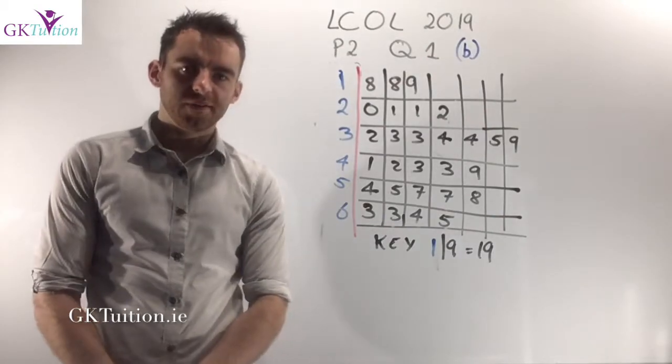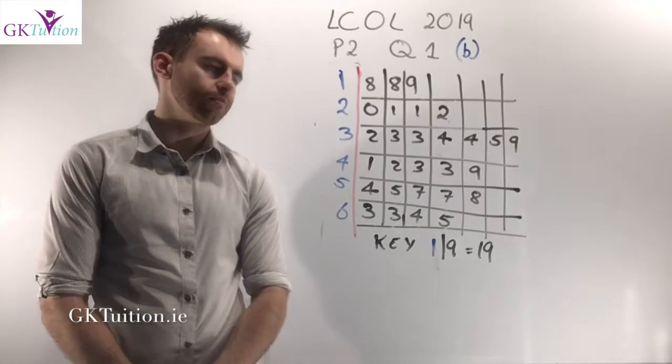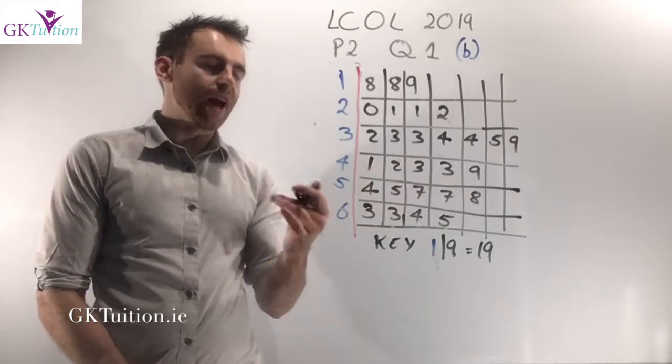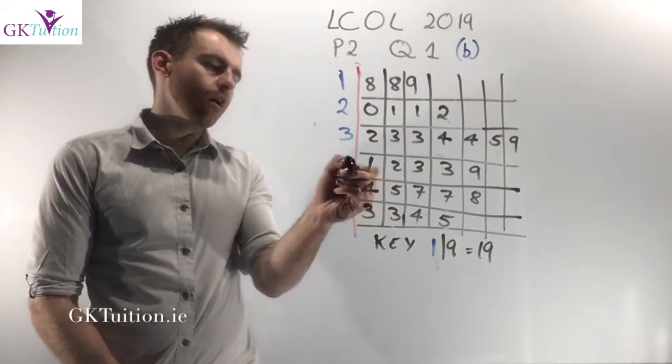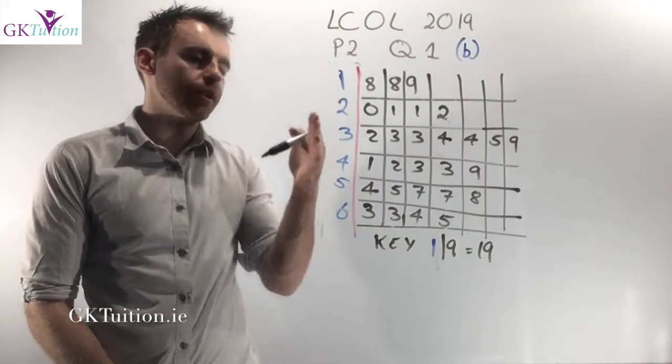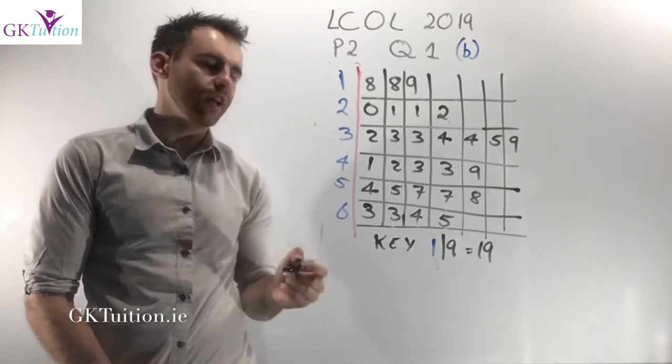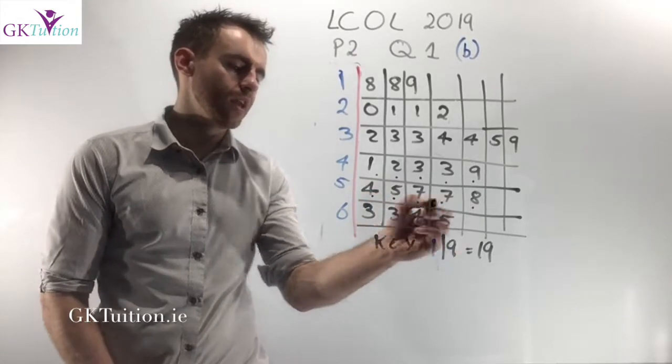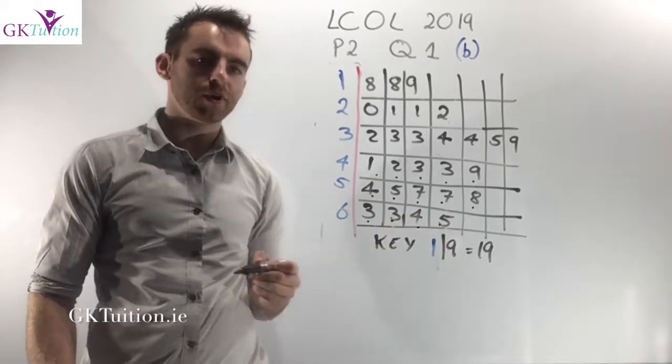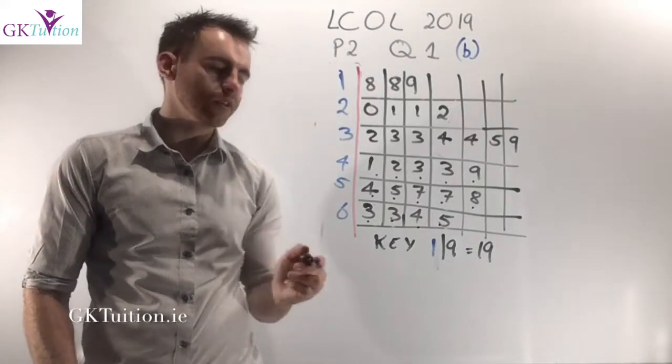In part B we're asked to find the percentage of employees who are older than 40 years of age. So that just means I need to basically add them up and figure out how many are over 40. So obviously anyone in the first three columns is under the age of 40. Anyone in the last three columns is over the age of 40. So I have 1, 2, 3, 4, 5, 6, 7, 8, 9, 10, 11, 12, 13, 14 people in this company who are over 40 years of age.